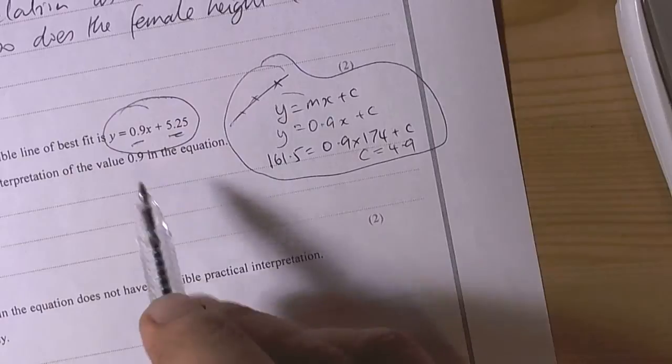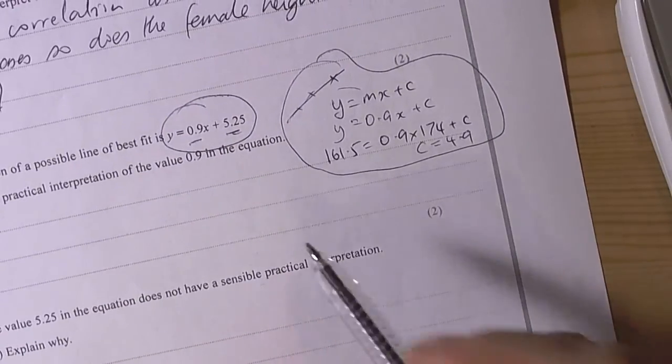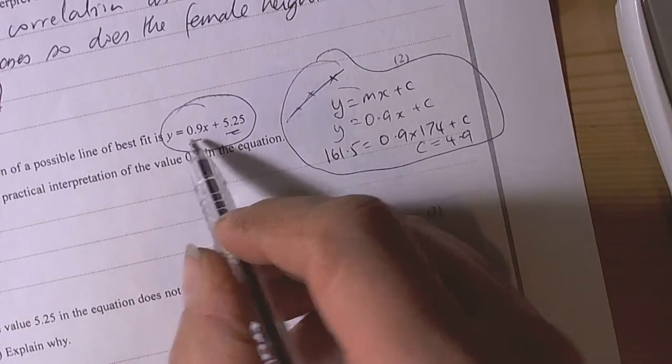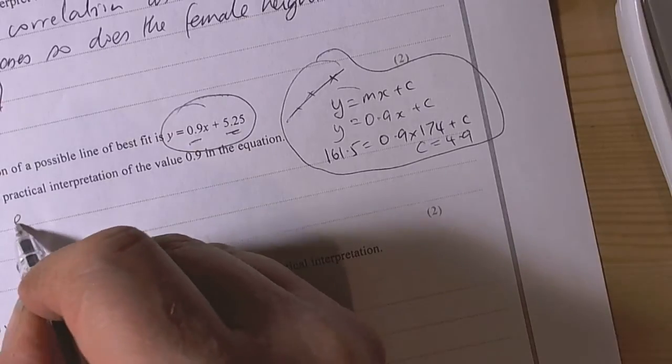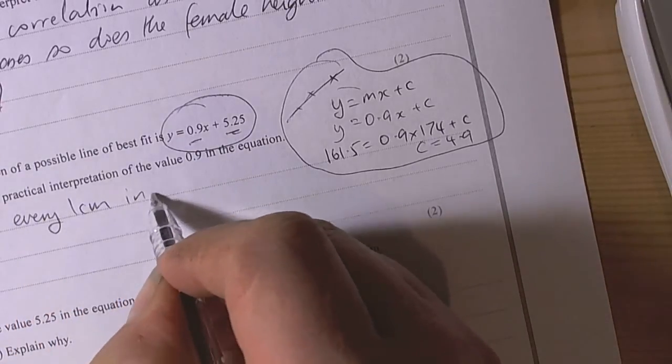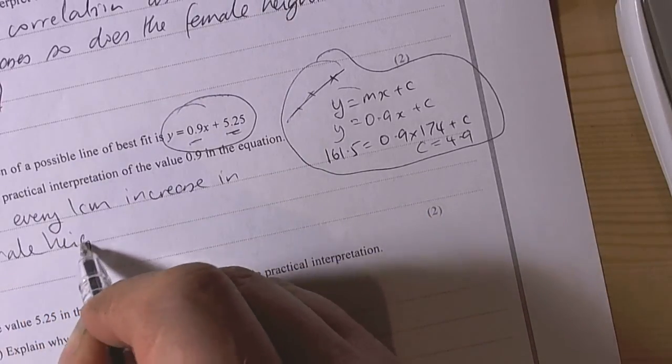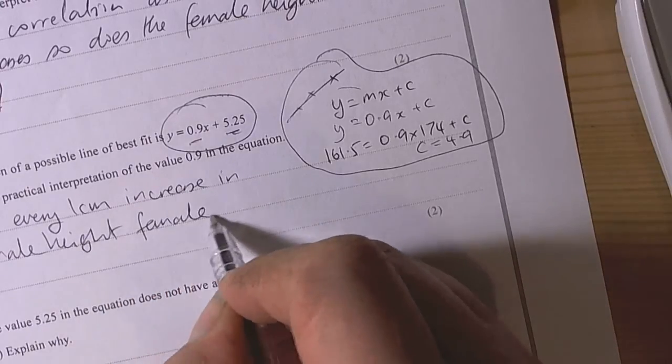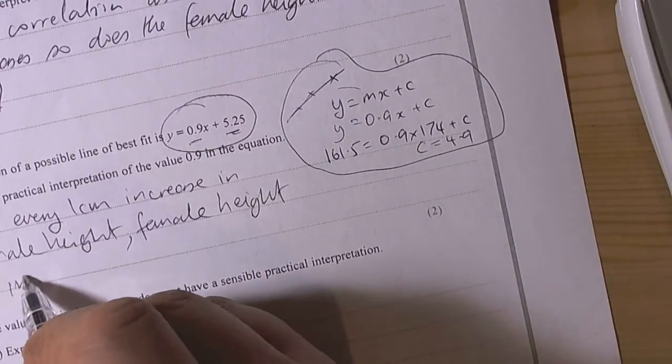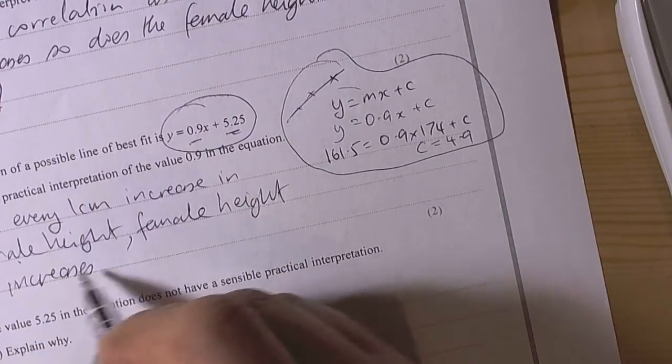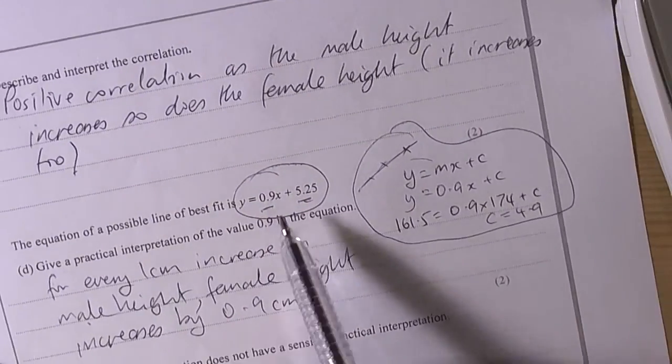That's the method they've used to calculate this equation. Give a practical interpretation of the value of 0.9 in the equation. Well, remember what that is - that's the gradient, the rate of change. Basically, it's saying for every 1cm increase in male height, female height increases by 0.9cm. That's what they're trying to say about this equation.